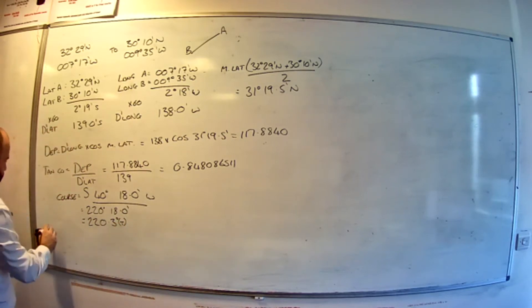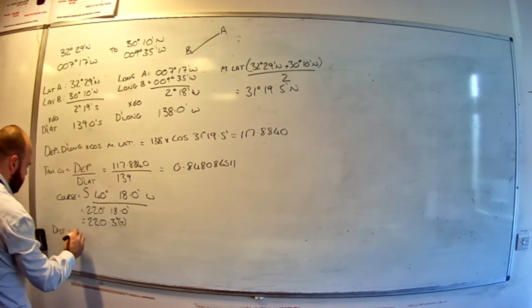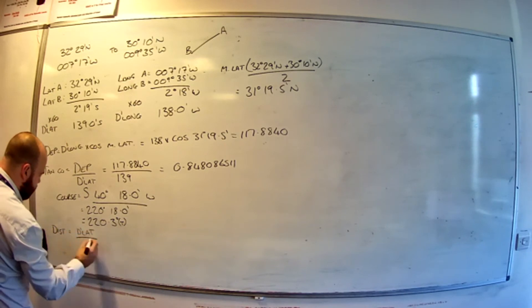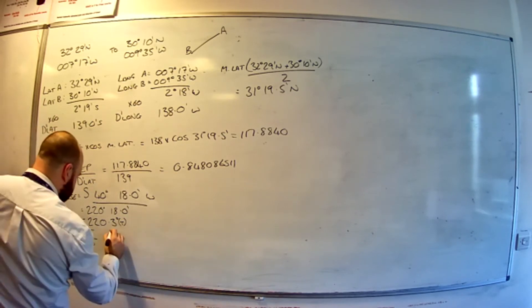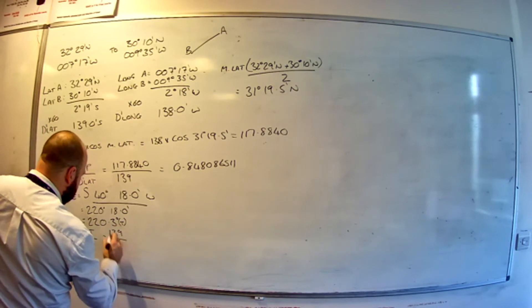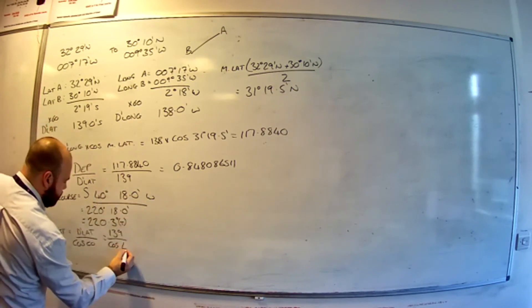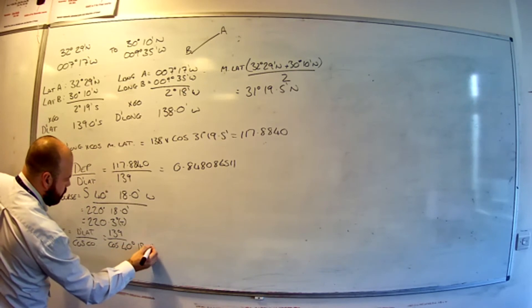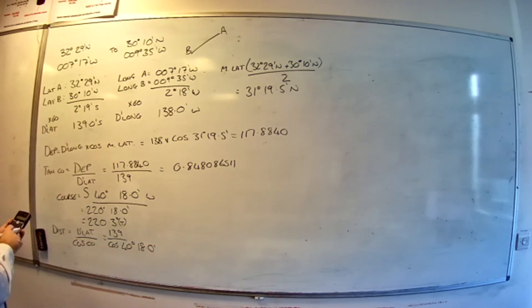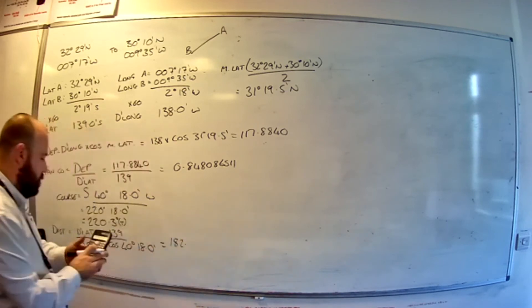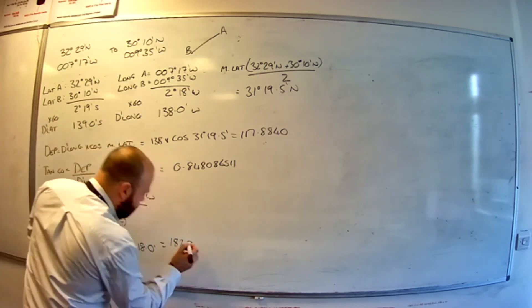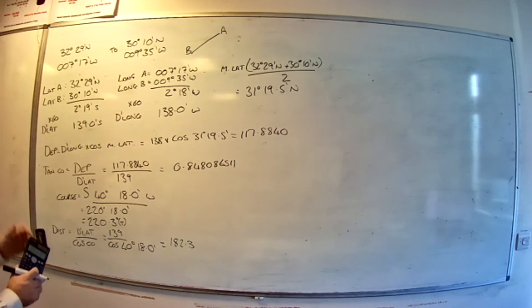So distance equals DLat divided by the cosine of the course. Cos course, which is going to be 139 divided by the cosine. And we're going to do the 40 degrees 18.0 minutes to keep a good level of accuracy. So 139 divided by cos 40 degrees 18 minutes gives 182.3 miles. So we're going to round that up to 0.3. Just keep distance to one decimal place.